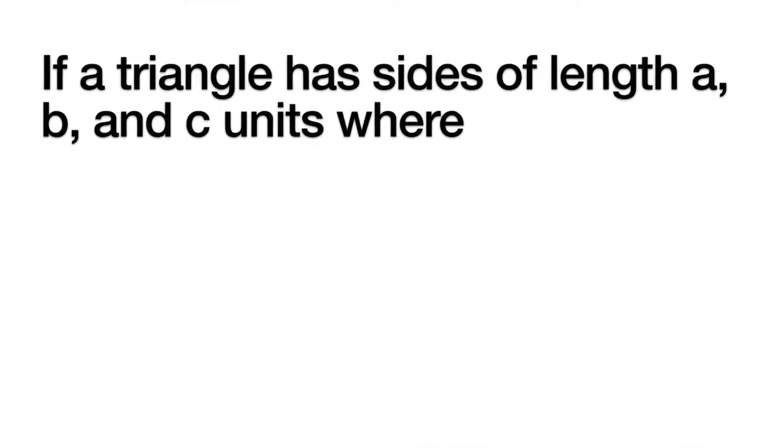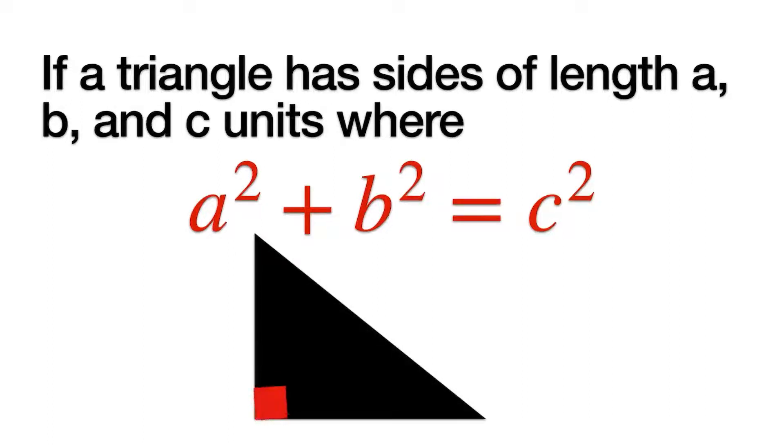If a triangle has side lengths of A, B and C units, where we know that A squared plus B squared is equal to C squared, then we know that we have a right triangle.